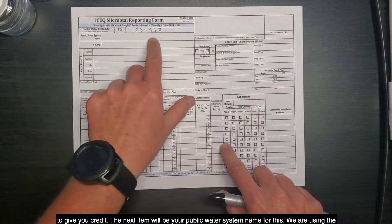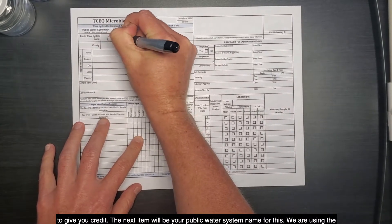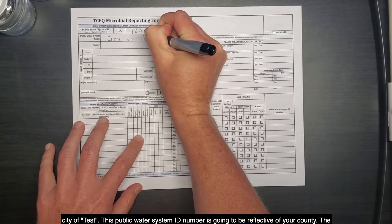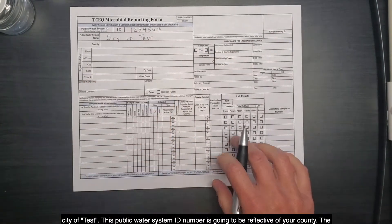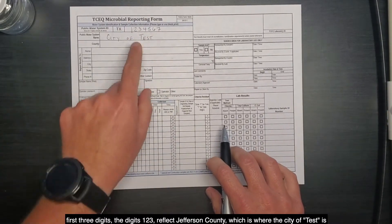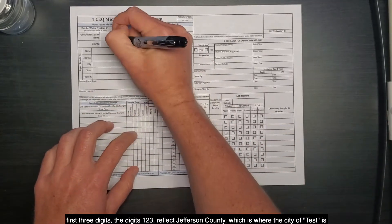The next item will be your Public Water System name. For this, we are using the City of Test. This Public Water System ID number is going to be reflective of your county, the first three digits. The digits one, two, three reflect Jefferson County, which is where the City of Test is located.